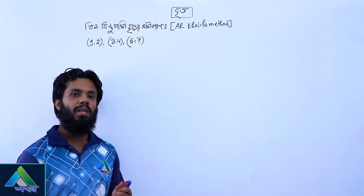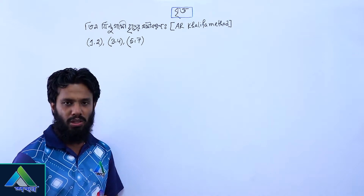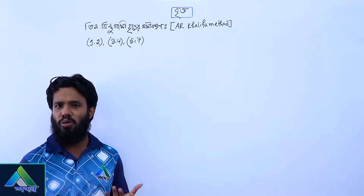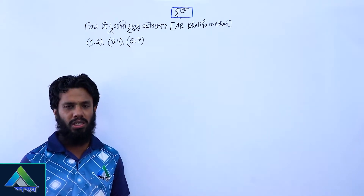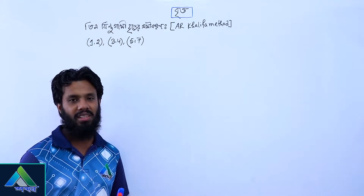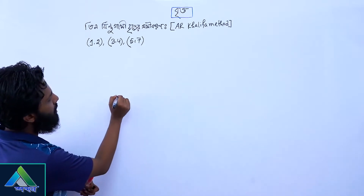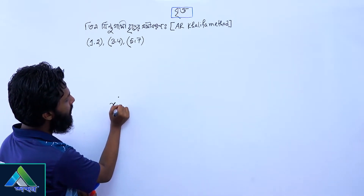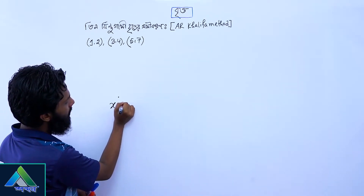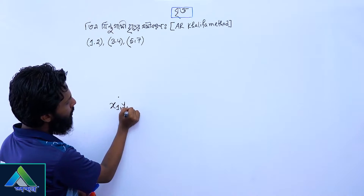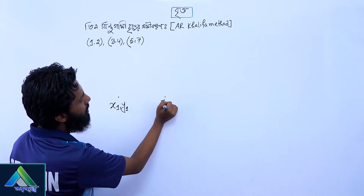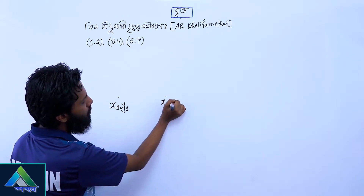The AR-Khalifa method is a generalised idea. We have two points: x1, y1 and x2, y2.